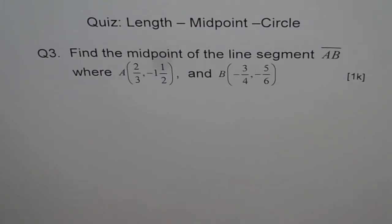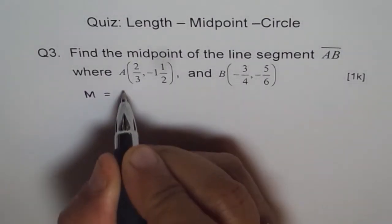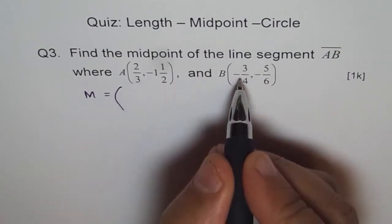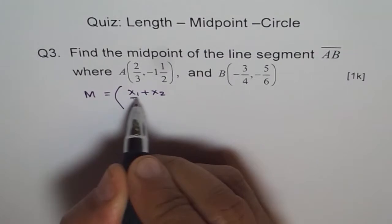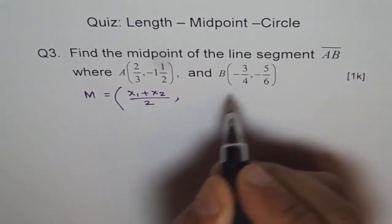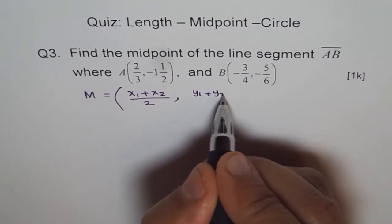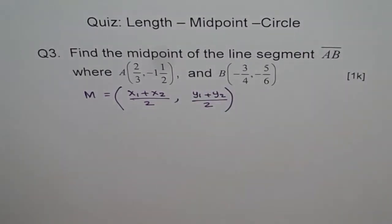Midpoint is very simple. The formula you remember, midpoint M will be the mid of x values, that is x1 plus x2 divided by 2, and midpoint of y values, y1 plus y2 divided by 2. That's the midpoint.